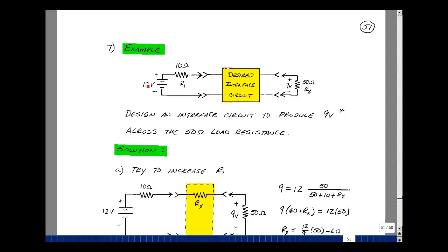What happens if we connected this directly? We'd have a voltage divider of 50 ohms over 50 plus 10 times 12. That turns out to be 10 volts, so obviously that won't work.